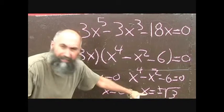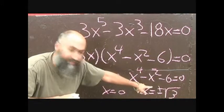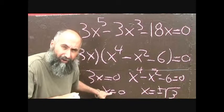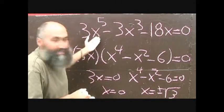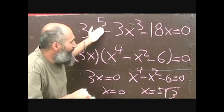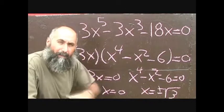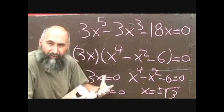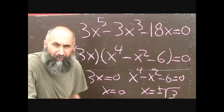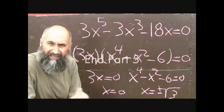So this question has given us three solutions: x equals 0, x equals positive square root of 3, and x equals negative square root of 3. Those are the x-intercepts for this equation. This is no longer a quadratic — it's an equation to the power of 5, meaning it has five different curves. We'll get into analyzing these functions much later, but right now we're focused on solving equations, which basically means finding the x-intercepts.